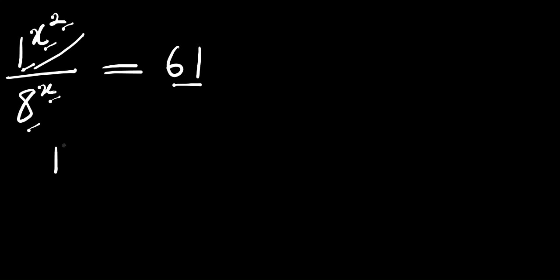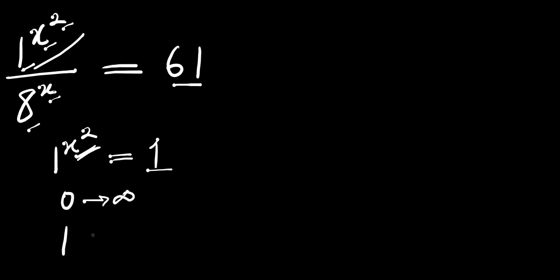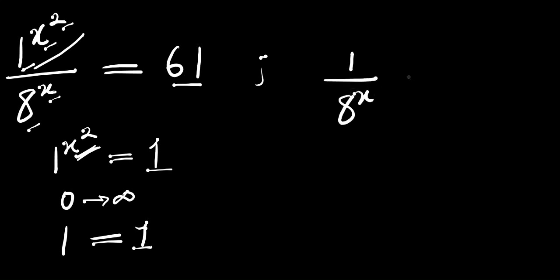If you have 1 to the power of x squared, this simply equals 1, because irrespective of the value of x — ranging from 0 to any number — we are still going to have 1. So 1 equals 1. That means the new equation will become 1 divided by 8 to the power of x, and this equals 61.